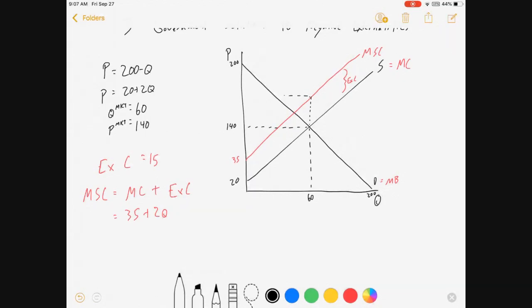What are the costs? Well, the marginal social cost is going to be 155. It's $15 higher than the private cost, the marginal cost. And the benefits are still 140. This gap, this externality, is 15.